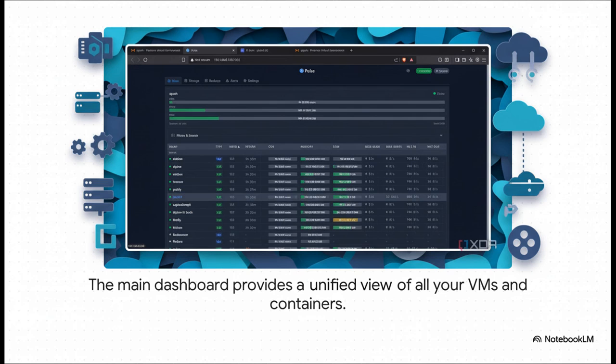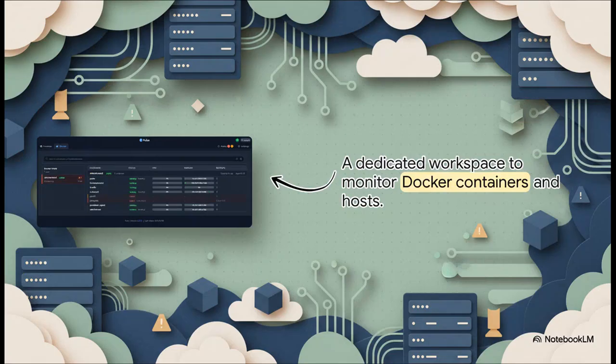Here's the main dashboard — your command center. What's great is how clean it is: your main node's health right up top, and below, a clear list of every VM and container with live CPU, memory, and disk stats. No clutter, just the data you actually care about. Pulse also has a whole dedicated workspace for Docker — deploy its lightweight agent and you get a beautiful summary of all your Docker hosts and containers, including status, resource usage, and restart counts, which is great for spotting services that are acting up.